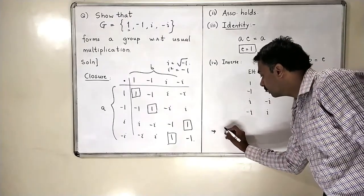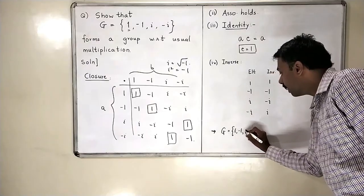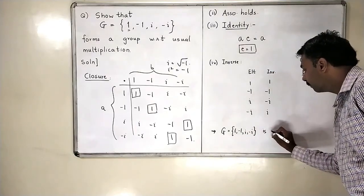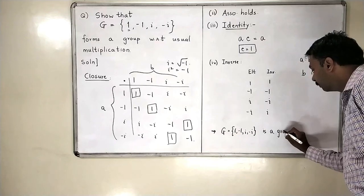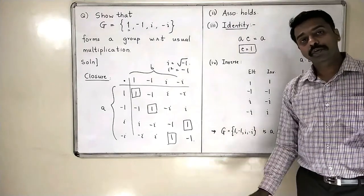This means that G, which is 1, minus 1, i, minus i is a group. This finishes the fourth problem.